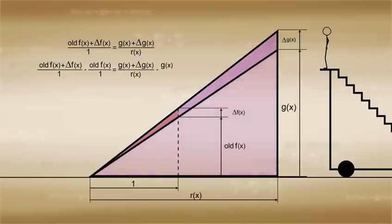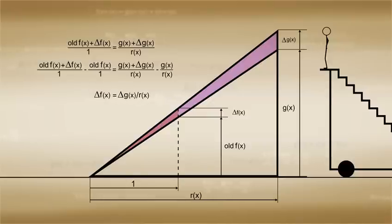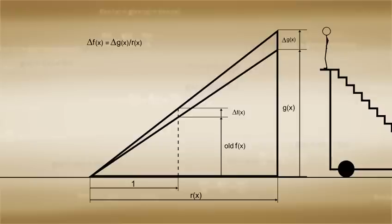This simplifies down to delta f over 1 is equal to delta g over r, or simply delta f is equal to delta g over r.